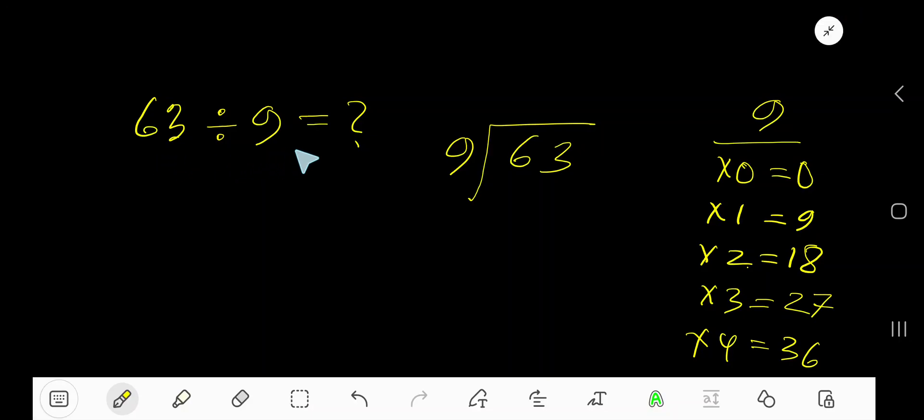63 divided by 9. Here, 9 is the divisor, so we need the multiplication table of 9. 9 times 0 is 0, 9 times 1 is 9, 9 times 2 is 18, 9 times 3 is 27, 9 times 4 is 36.